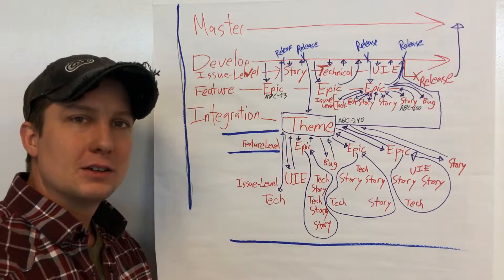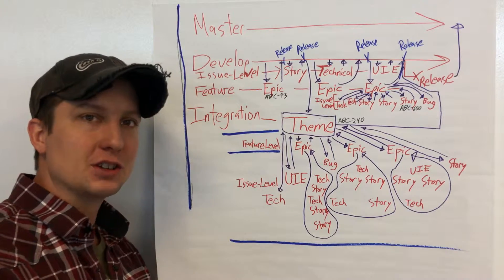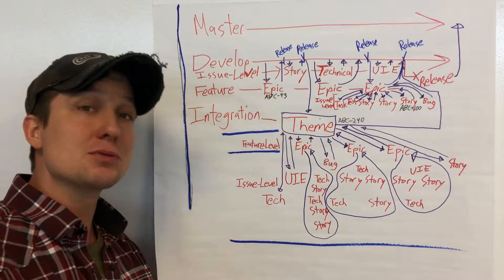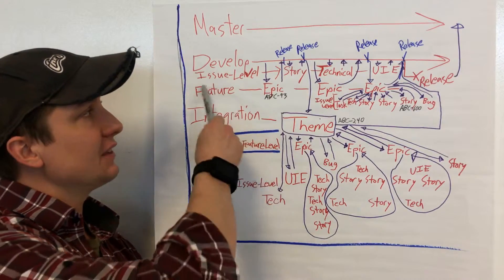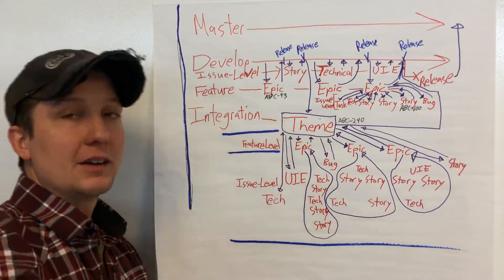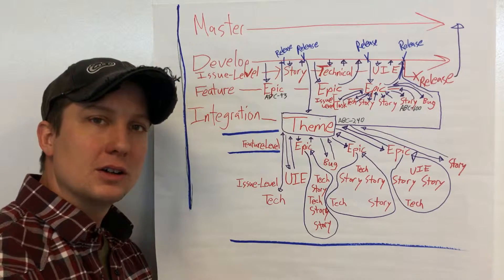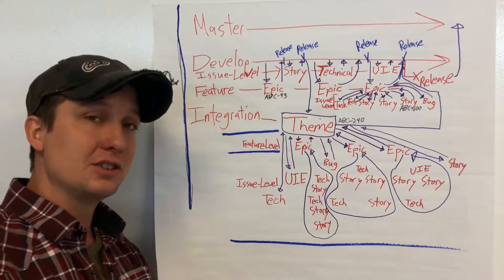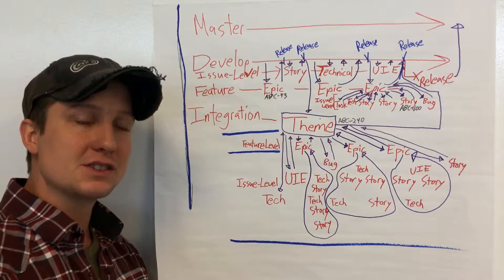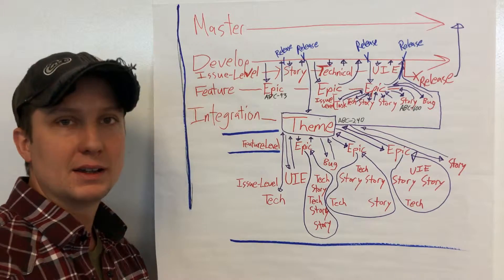When you use Jira with GitHub integration, what's really great is in your release report, it starts to show you the activities at the issue level that are being completed within the Git repository. All you have to do is tag your branches and commits that way.